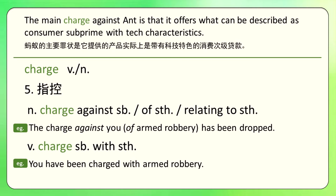做名词的时候，就像这里的用法：charge against somebody，就是针对某人的指控，也可以说charge of something，就是指控某人犯了什么事情，或者charge relating to something，就是这个指控跟什么事情有关。这几个搭配都可以，比如the charge against you has been dropped。